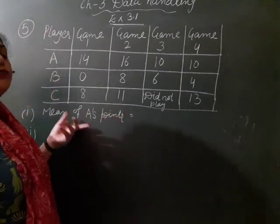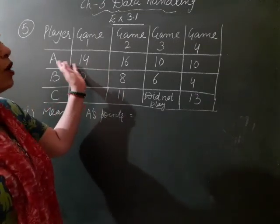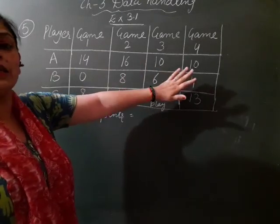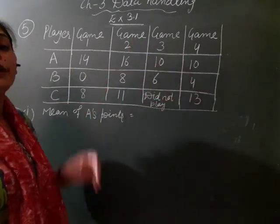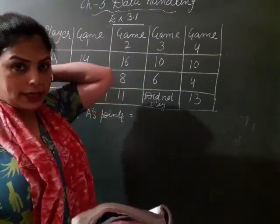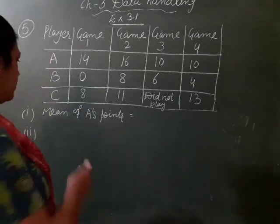Your first question is you have to find the average points of getting by A. So what is the formula for mean? Mean ka kya formula hota hai? That is sum of observation dividing by number of observation.